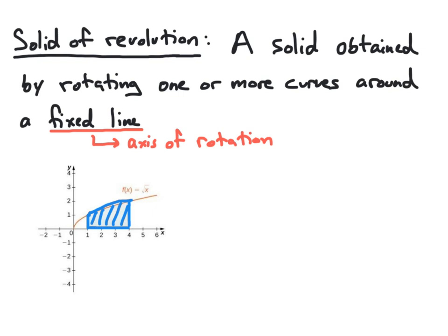We're going to create a solid of revolution by rotating this region around the x-axis, which will be our axis of rotation — I'll indicate that by drawing a circular arrow around the x-axis. When we rotate this region around the x-axis, we obtain the three-dimensional solid shown here. Notice that the bottom half of this solid is just a mirror image of the top half, bounded by the reflections of the curves used to describe the original region.